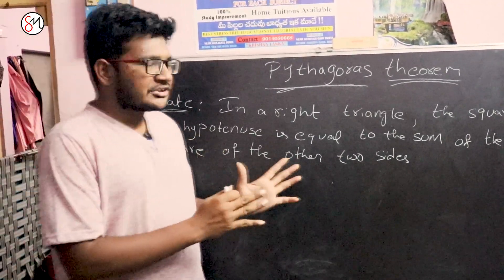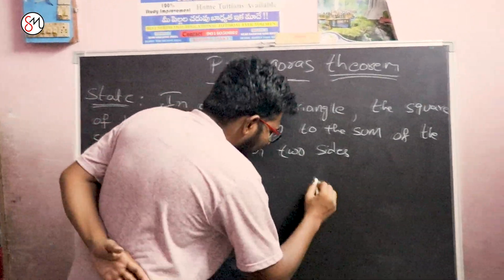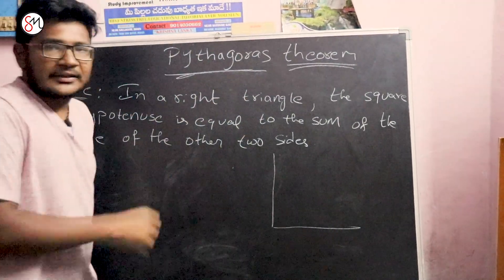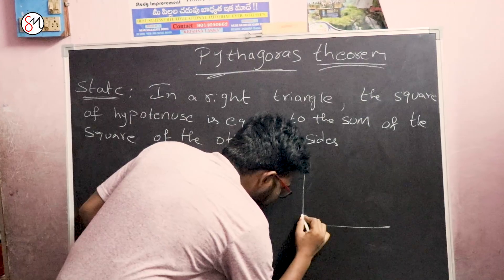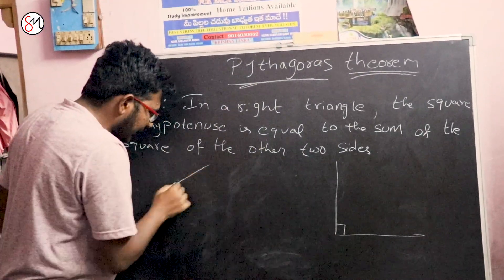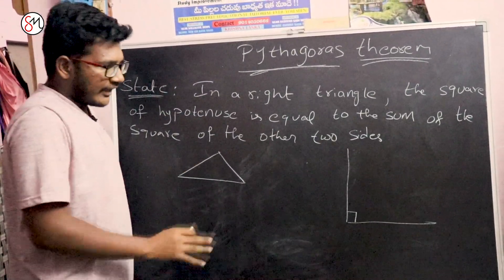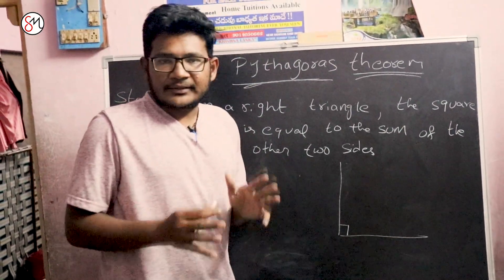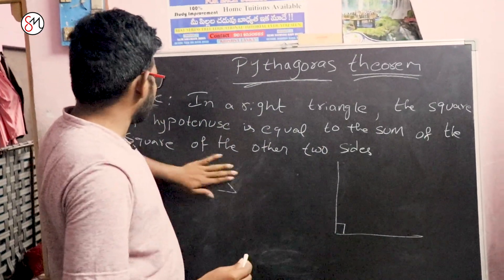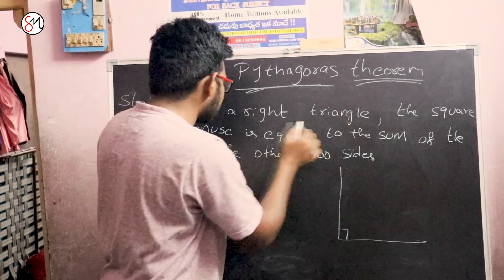Now I have a drawing to show you. This is a right angle triangle. If we want to make a right angle triangle, we will see 90 degrees. Let's look at the right angle triangle here. The square of the hypotenuse is equal to the sum of the other two sides.